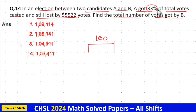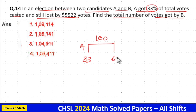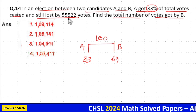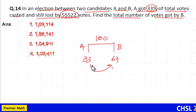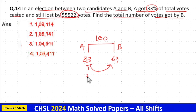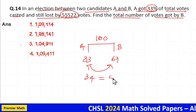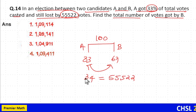Out of 100, 33% was received by A, that is 33 out of 100, and the remaining 67% was received by B. Since A still lost by that amount, the difference between A and B is equal to 67 minus 33, which is 34%. So 34% equals 55,522.